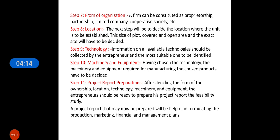The next step is the form of organization. A firm can be constituted as a proprietorship, partnership, limited company, or cooperative society, etc. It totally depends on the size and turnover of your enterprise. If it is very small, you go for sole proprietorship, and as the business grows you move to partnership, limited company, or cooperative society.